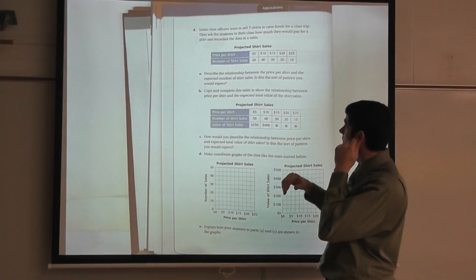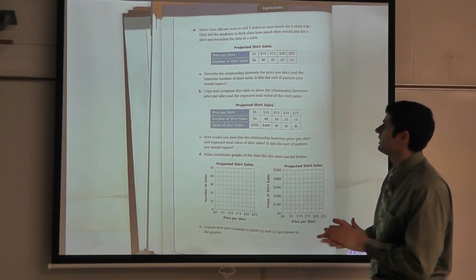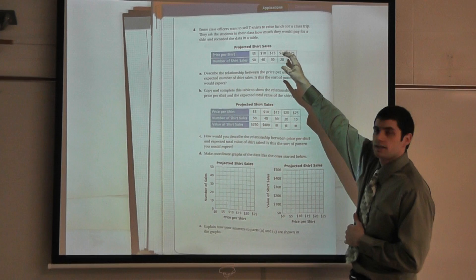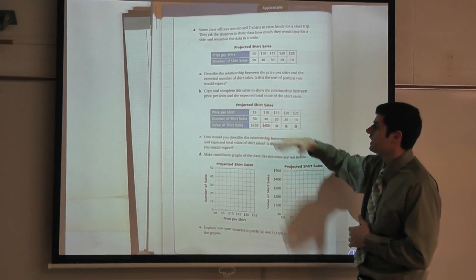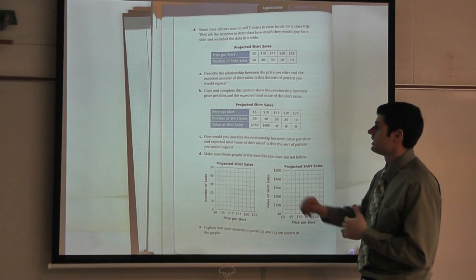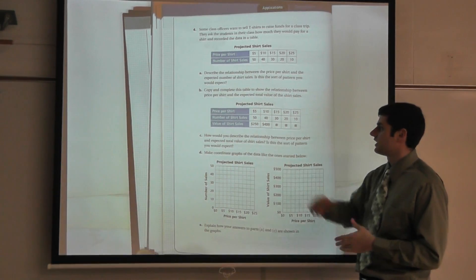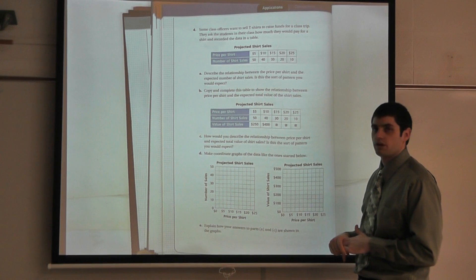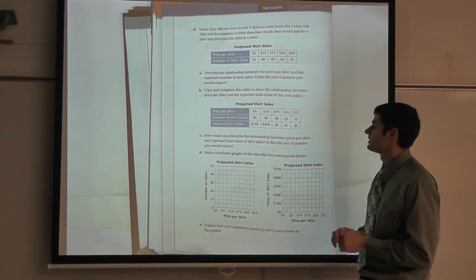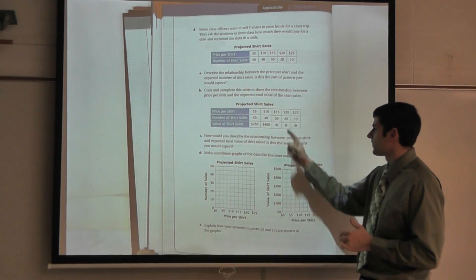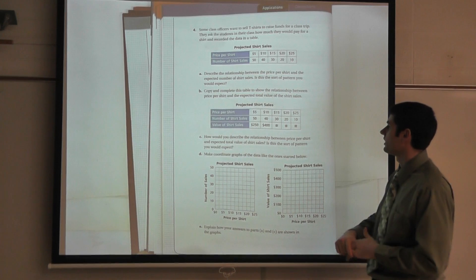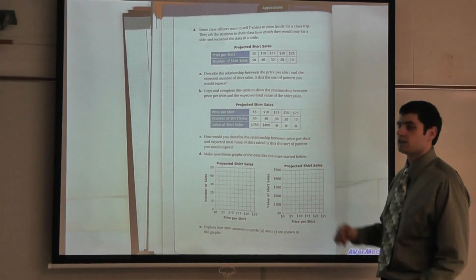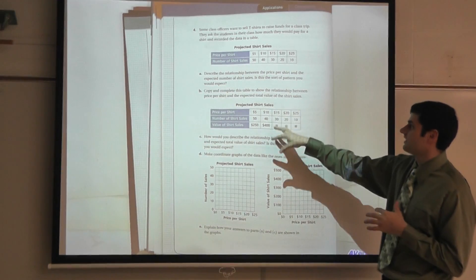Question B says: copy and complete this table to show the relationship between price per shirt and the expected total value of shirt sales. If I sell 50 t-shirts at five dollars each, I get $250. At ten dollars with 40 students, I get $400. At fifteen dollars with 30 students, I get $450. At twenty dollars with 20 students, I get $400. And at twenty-five dollars with 10 students, I get $250.